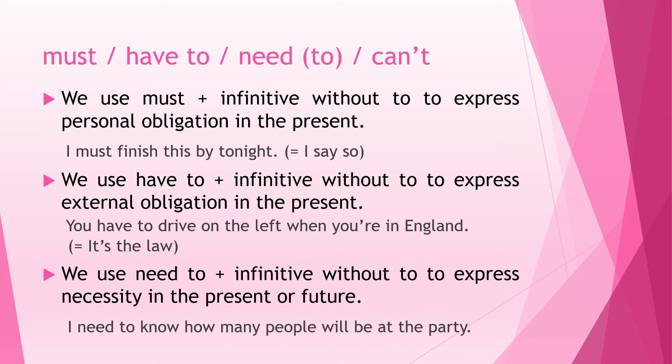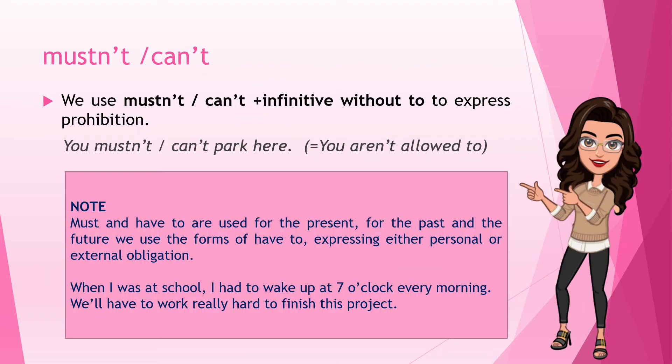We use 'mustn't' or 'can't' plus the infinitive without 'to' to express prohibition — when you are not allowed to do something. For example: 'You mustn't park here' or 'You can't park here' — that means you aren't allowed to.